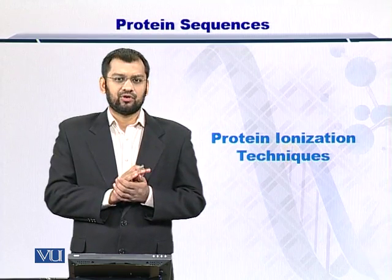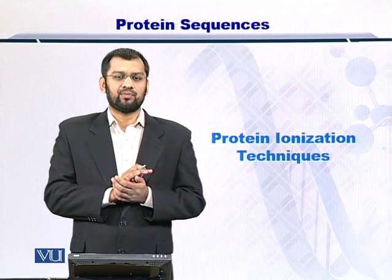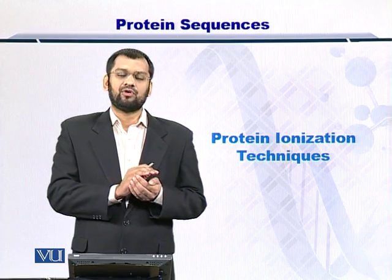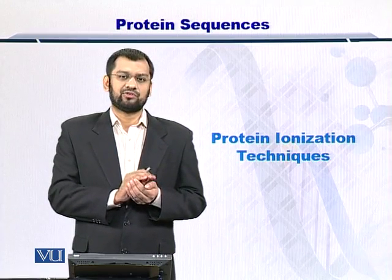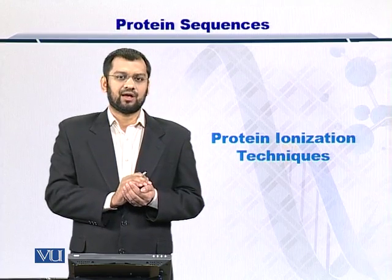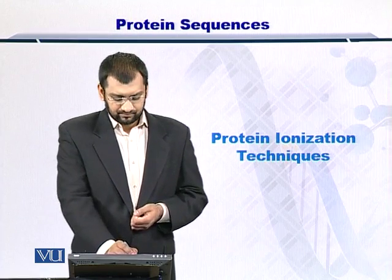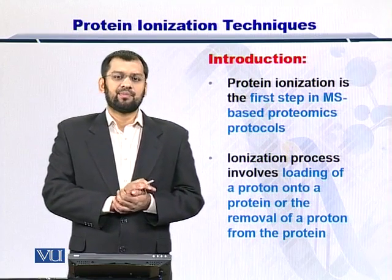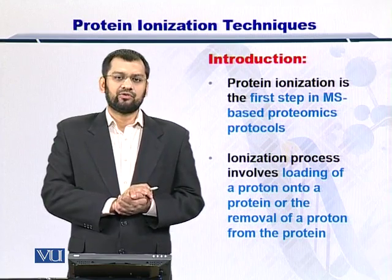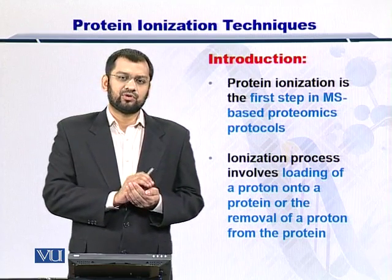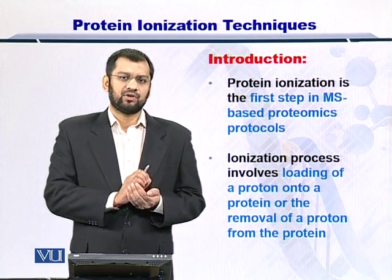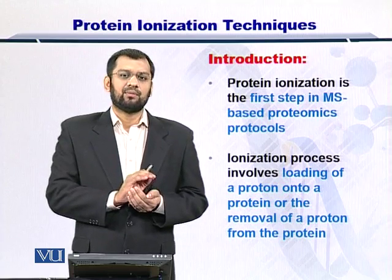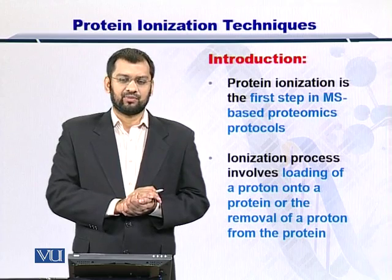If you are doing bottom-up proteomics, your sample will only contain peptides. If you are doing top-down proteomics, then your sample will contain intact or whole proteins only. The protein ionization step is extremely important because without ionizing the protein or peptide in question, you cannot have a deflection on it by the magnetic field of the mass spectrometer.